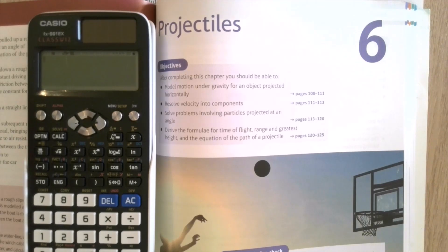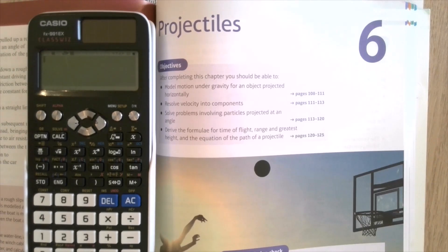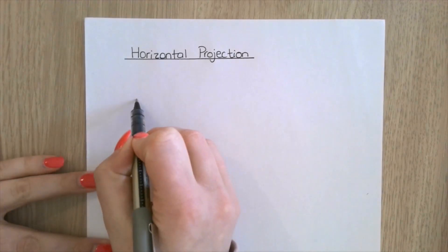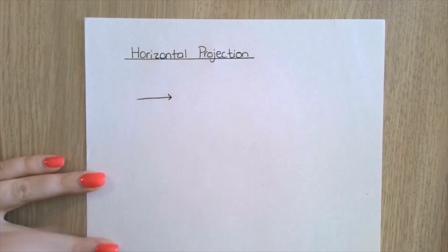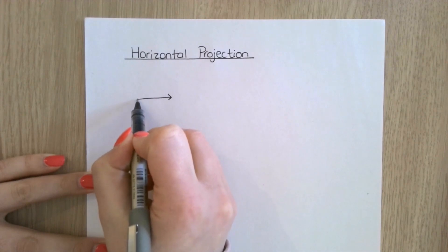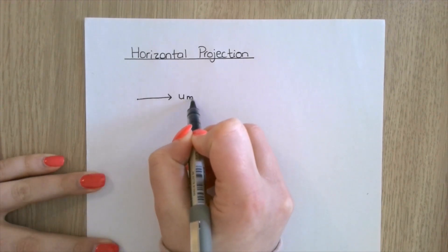Hello guys, welcome to the projectiles video. I'm going to go through the examples from the textbook and break them into chunks based on the exercises they fall under. The first thing we're going to look at is horizontal projection - when something is projected horizontally, it will have an initial speed.